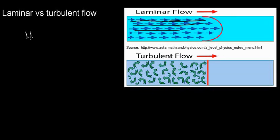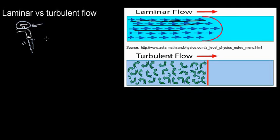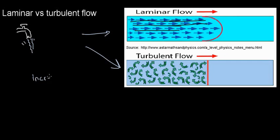To relate this to everyday life: if this is my faucet and I open it just a little bit, I'll have a small laminar flow. But if I increase it, I'm going to get some rippling — this is turbulent flow. By opening it more and introducing more fluid, I can take a laminar flow and turn it into turbulent flow.